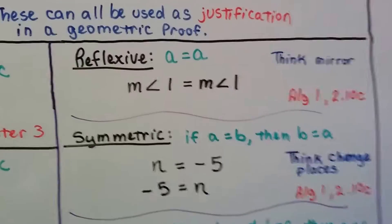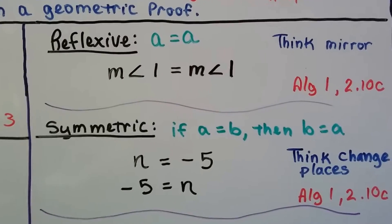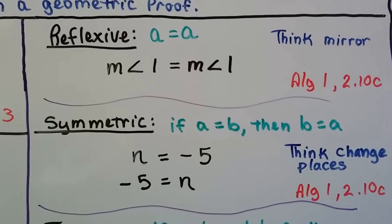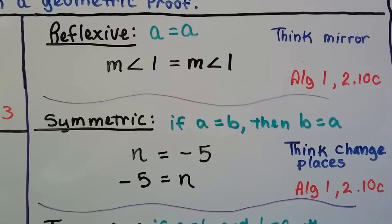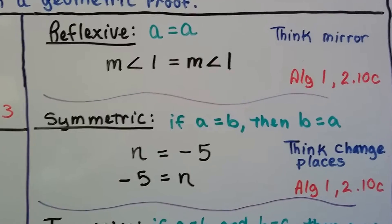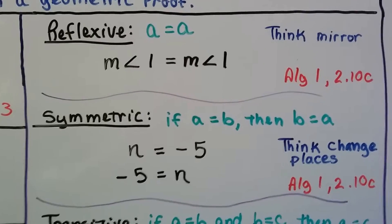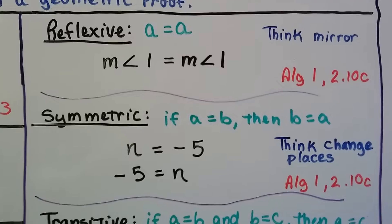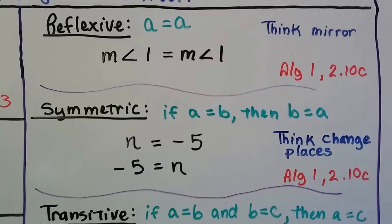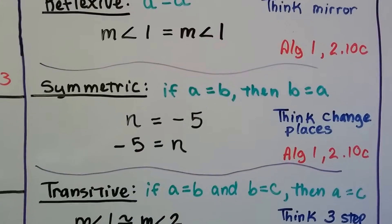We have the reflexive property, which says A equals A. Think of a mirror — it's just reflecting across. So we could say the measure of angle 1 equals the measure of angle 1. This was covered in Algebra 1, lesson 2.10c, linked in the description.